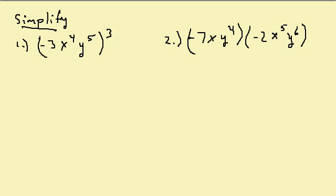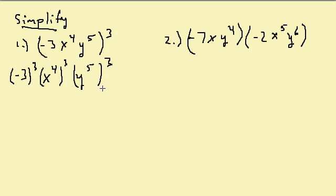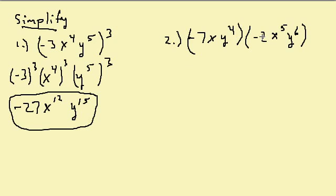Now let's take a look at these. I'm going to raise each term inside the parenthesis to this third power. So I get negative 3 raised to the third, x to the fourth raised to the third, and y to the fifth raised to the third. This gives me negative 27, and multiplying the exponents: x to the 12th, and 5 times 3 gives y to the 15th — there's my answer.